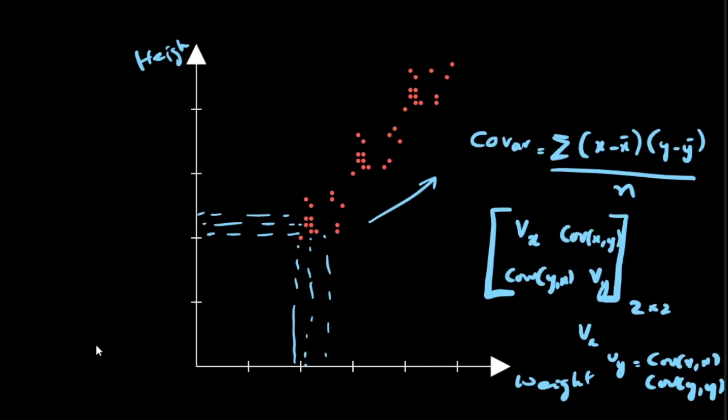If I go back to my original data set which captures the weight and height of the students, I can see that this is the direction which has the highest amount of variance in this data set. This is where the covariance matrix comes into picture,